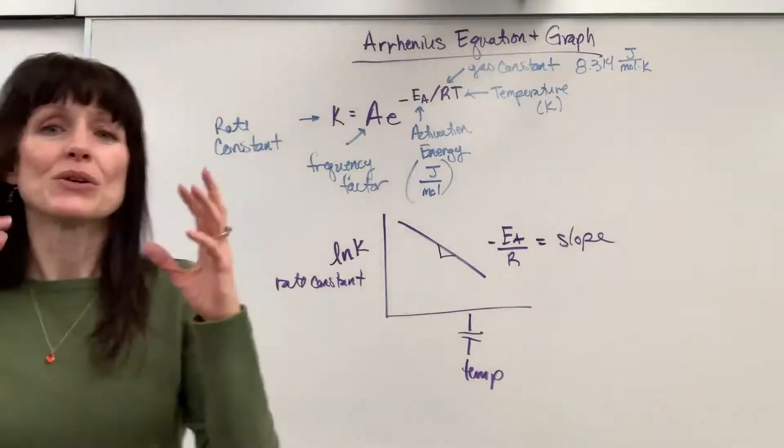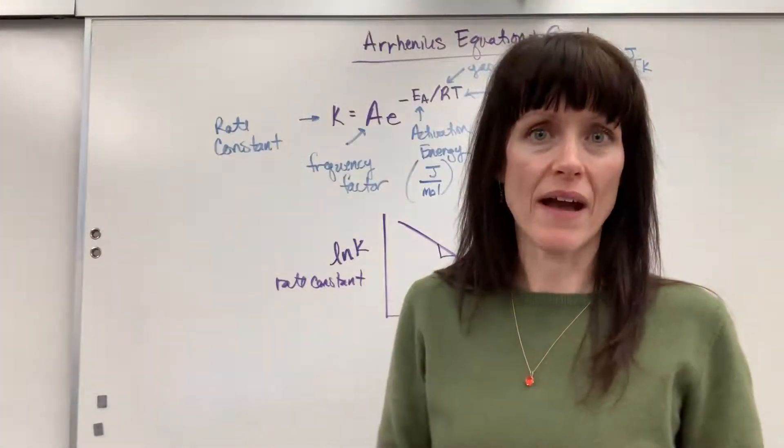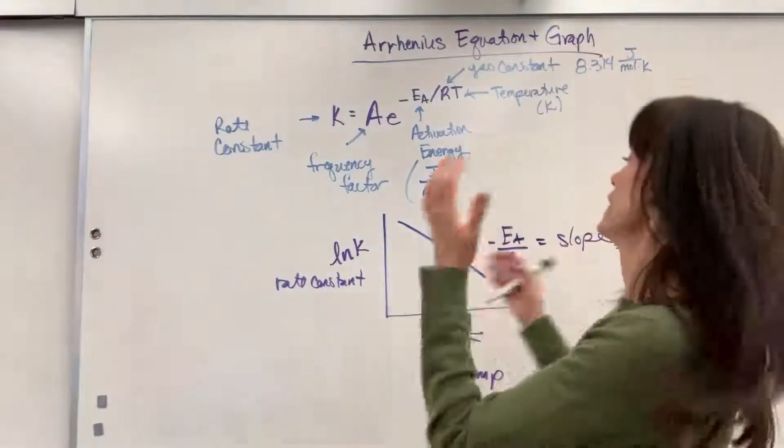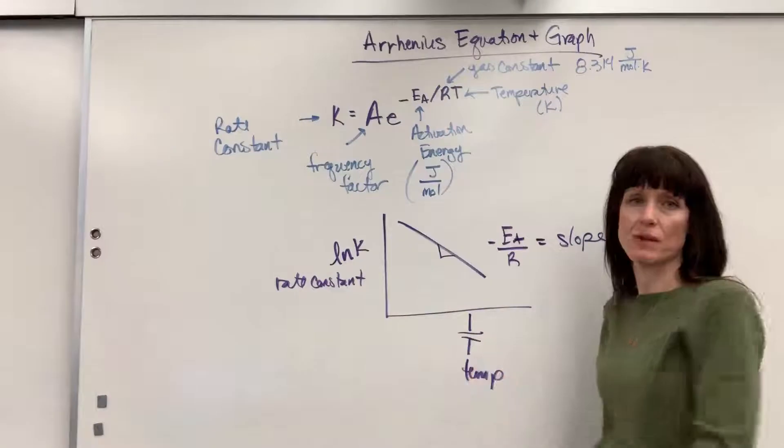Okay, nice. So, you've learned three graphs, zero order, first order, second order, that you have to memorize for rate laws. This is the fourth graph. When you're talking about rate, when you're talking about kinetics, you have to have this memorized.